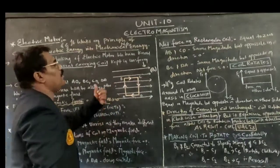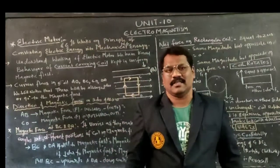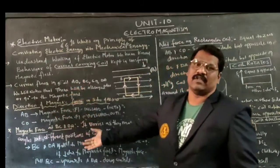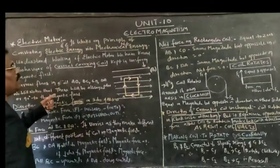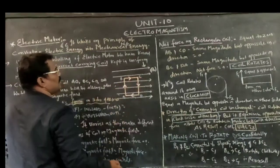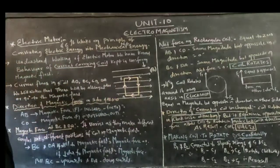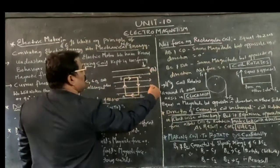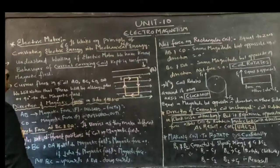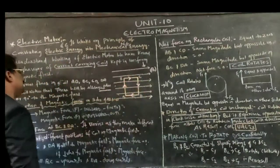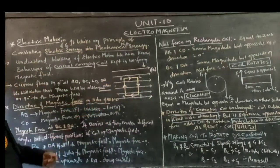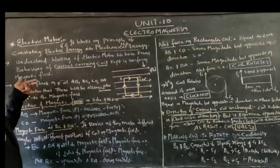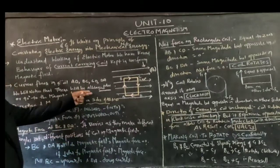We can understand how the current-carrying coil kept in the uniform magnetic field behaves — how it rotates around its own axis. The current flows A to B, B to C, C to D, and D to A. The magnetic field will always be acting perpendicular — at 90 degrees — on the AB surface as well as the CD surface.